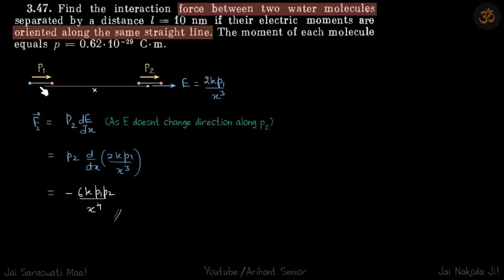So the electric field due to the first dipole is 2KP1 by X cube on the axial position, and force we can write as P2 dE by dx. Why are we able to do this? Because E does not change direction along P2.